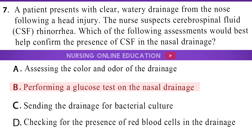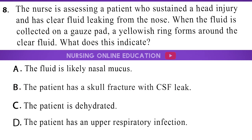The answer is option B: Performing a glucose test on the nasal drainage. The nurse is assessing a patient who sustained a head injury and has clear fluid leaking from the nose. When the fluid is collected on a gauze pad, a yellowish ring forms around the clear fluid. What does this indicate? A. The fluid is likely nasal mucus. B. The patient has a skull fracture with CSF leak. C. The patient is dehydrated. D. The patient has an upper respiratory infection.